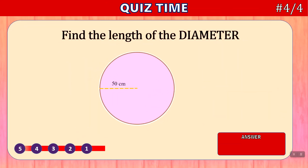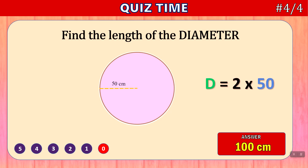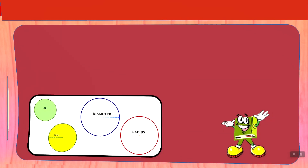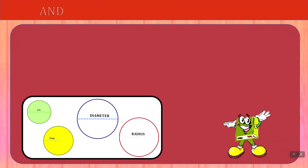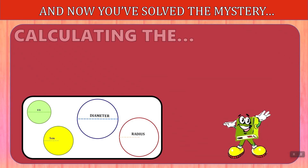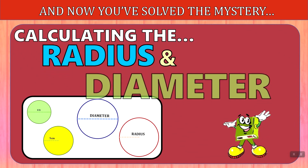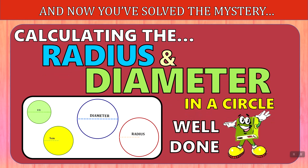Last question — find the length of the diameter. Time's up. The answer is not 25, but 100 centimeters. The formula is D equals 2 times R; in this case, R is 50, and 2 times 50 is 100. And now you've solved the mystery of how to calculate the radius and the diameter in a circle. Well done.